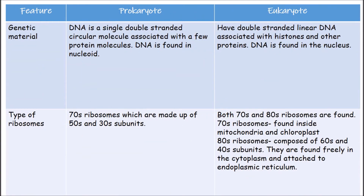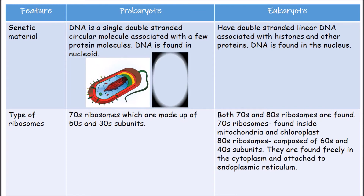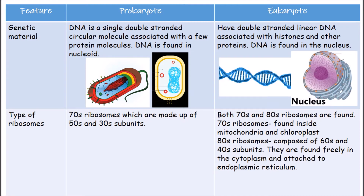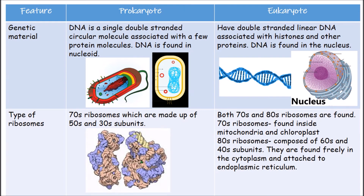The DNA of prokaryotes is a single double-stranded circular molecule associated with a few protein molecules. It lies free in the cytoplasm in a region called the nucleoid, which is not bounded by a membrane, and there is no nucleolus. Eukaryotes have double-stranded linear DNA associated with histones and other proteins, contained in chromosomes within the nucleus, which is surrounded by a nuclear membrane and has a nucleolus. Prokaryotes have 70S ribosomes, made up of 50S and 30S subunits, while eukaryotic cells contain both 70S and 80S ribosomes.